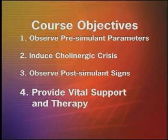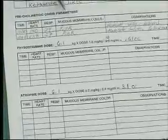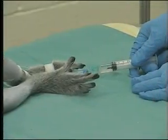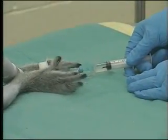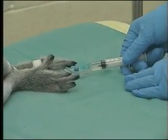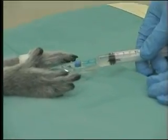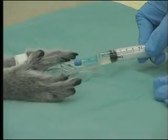Objective 4: providing vital support and therapy. When the students have observed and recorded all clinical signs of the induced cholinergic crisis, definitive therapy can be provided. Atropine sulfate at a dose of 0.2 milligrams per kilogram in a pre-measured syringe is injected into the vascular line without recapping the needle.